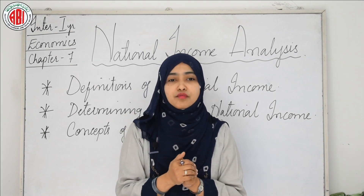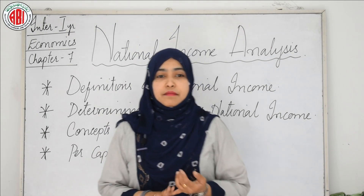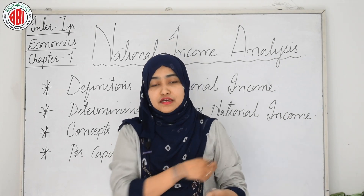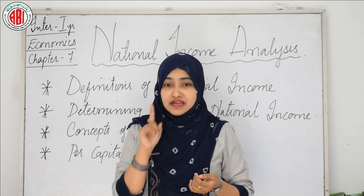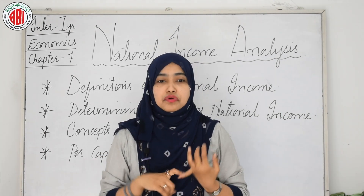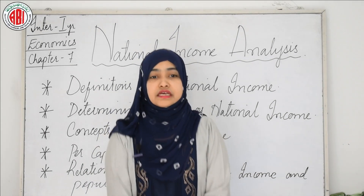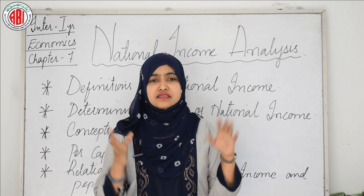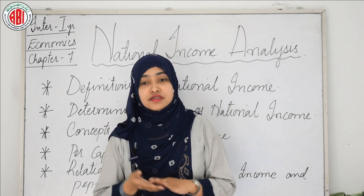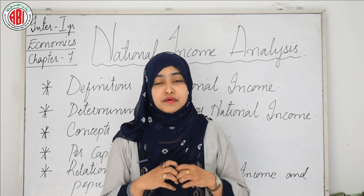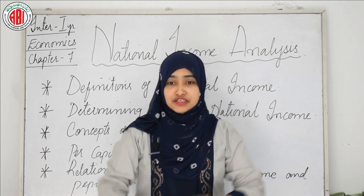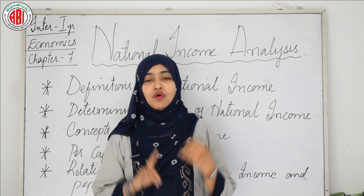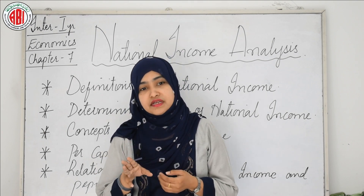Per capita income is the average income of the people in a country in a particular year. It is calculated by dividing the national income at current prices by the population of the country in that year. There is a close relationship between national income and population — these two together determine the per capita income. If the rate of growth of national income is 6% and the rate of growth of population is 3%, then the rate of growth of per capita income will be 3%.